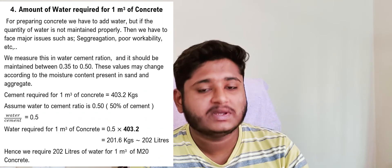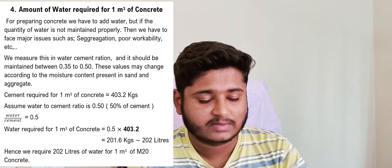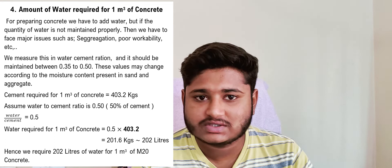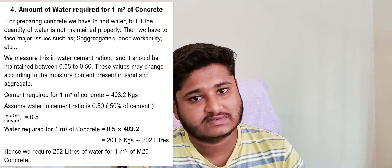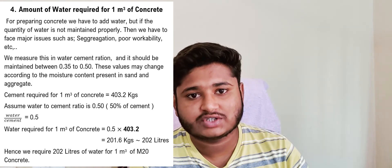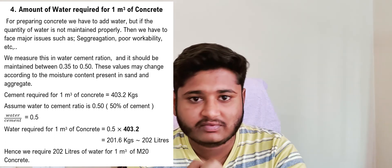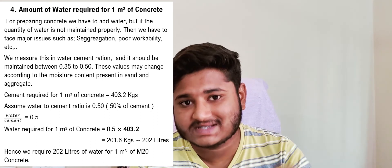Next, we calculate the amount of water required for 1 cubic meter of concrete. Maintaining the correct water quantity is critical — too much or too little causes issues like segregation and poor workability. Water quantity is measured by the water-cement ratio, which should be in the range of 0.35 to 0.5, and may change based on moisture content in sand and aggregate. Using a water-cement ratio of 0.5: water = 0.5 × 403.2 = 201.6 kg, which is equivalent to approximately 202 liters.